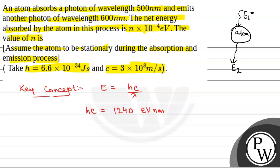Here, E1 will be equal to 1240 by 500, which is hc by lambda. hc is equal to 1240 electron volt nanometer and lambda in nanometer is given as 500. And E2 will be equal to similarly 1240 by 600, which is the energy emitted.